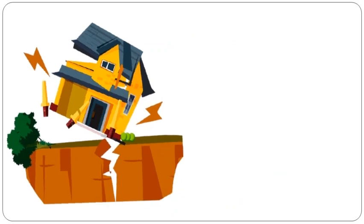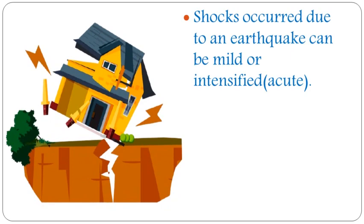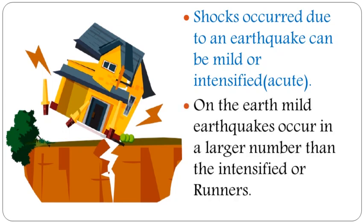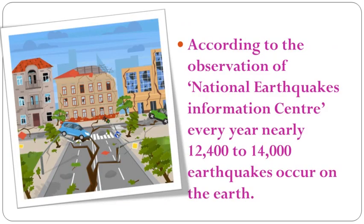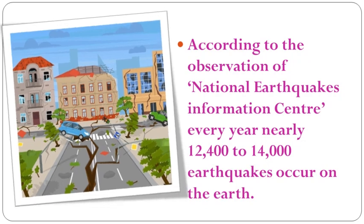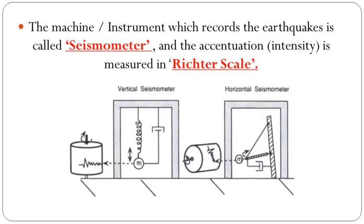Shocks due to an earthquake can be mild or intensified. Mild earthquakes occur in larger numbers than intense ones. Every day, earthquakes are noticed at some place on the earth. According to the National Earthquake Information Center, nearly 12,400 to 14,000 earthquakes occur on the earth every year. The seismometer is the mathematical measuring unit of earthquakes — there are two types: vertical and horizontal seismometer.